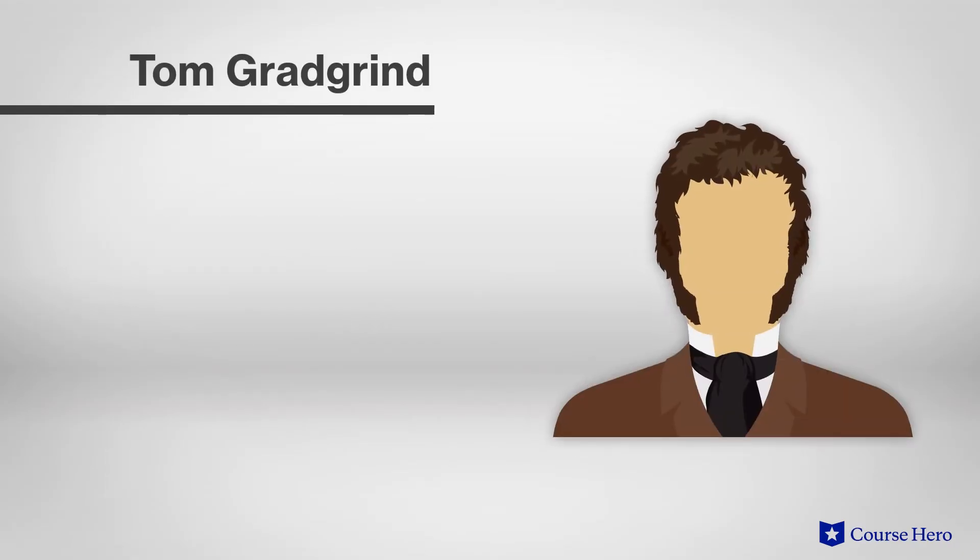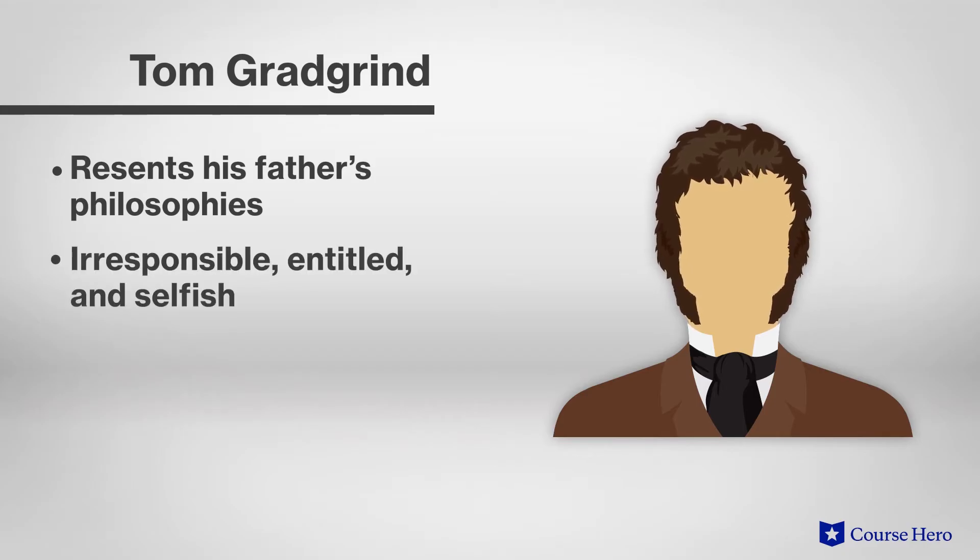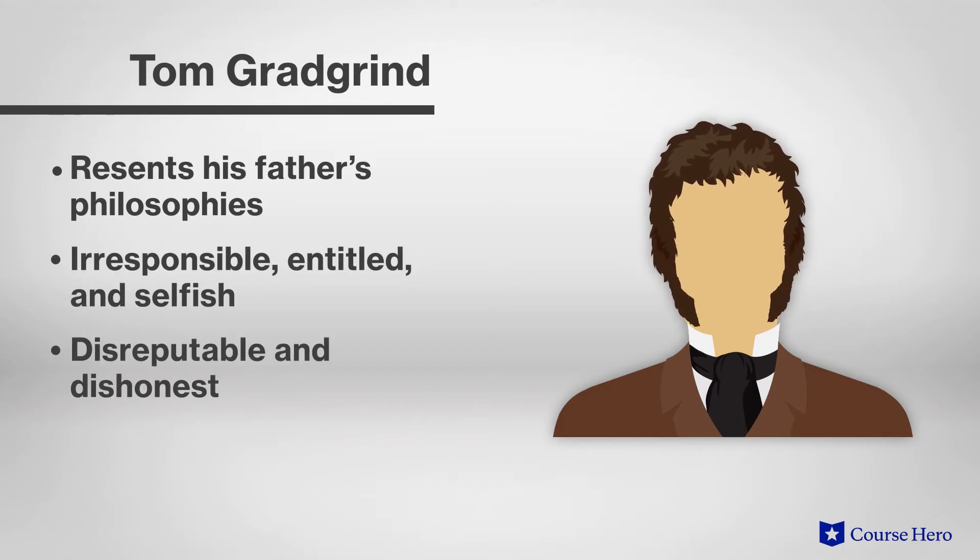Tom Gradgrind grows up feeling resentful of his father's philosophies and hating his own work. Referred to as a whelp, Tom is often irresponsible, entitled, selfish, disreputable, and dishonest. He steals from the bank and attempts to frame Stephen Blackpool for the crime.